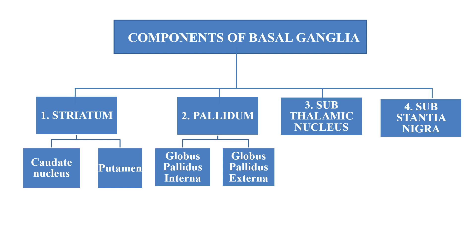The components of basal ganglia: basal ganglia are formed by four components — the striatum, the pallidum, the subthalamic nucleus, and the substantia nigra. The striatum is formed by the caudate nucleus and the putamen, and the pallidum is formed by the globus pallidus interna and the globus pallidus externa.